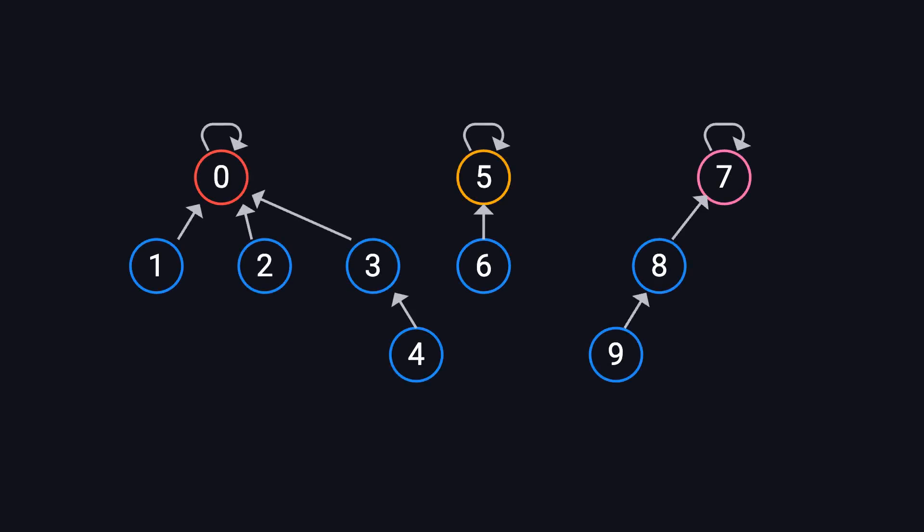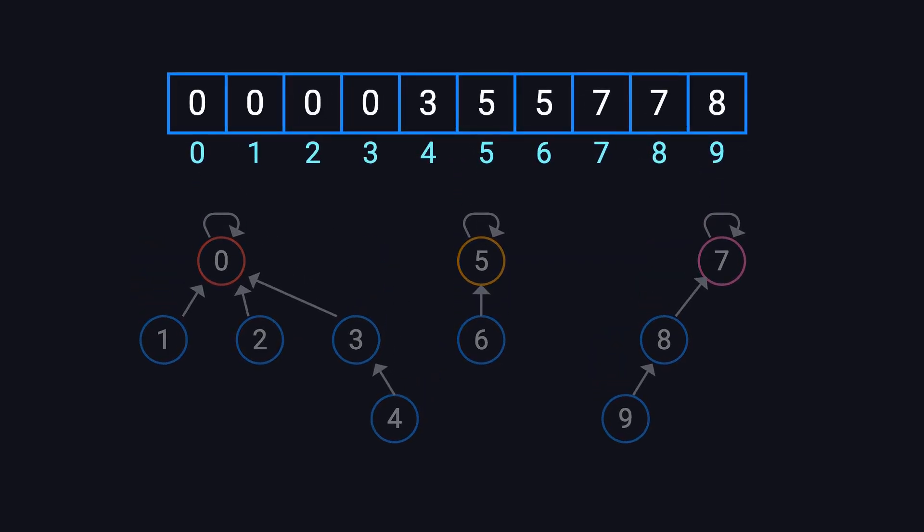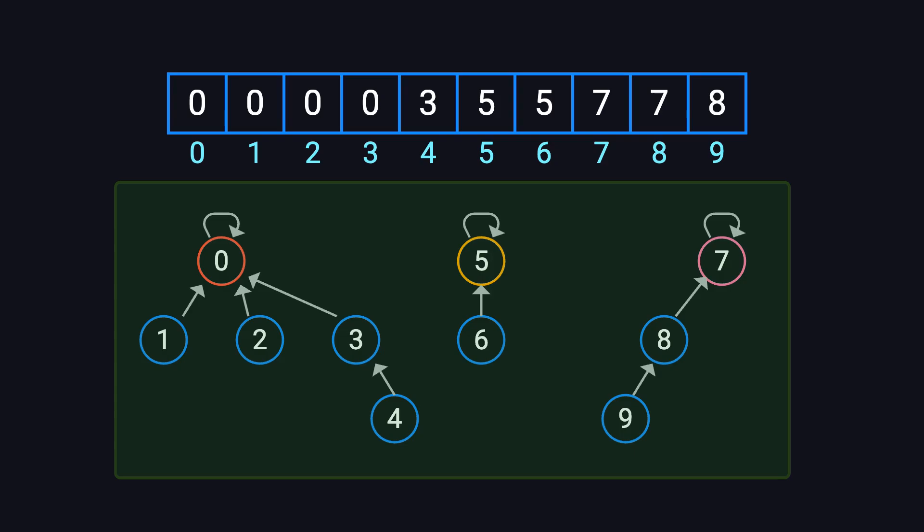While we usually imagine the Union-Find structure visually as a tree, in actual programming, it's typically implemented using an array. In this array, each index represents an element, and the value at that index represents its parent. For example, if parent[4] equals 3, it means that element 4's parent is element 3. By following parent links upward step by step, we eventually reach an element that is its own parent. This element is called the root, and it uniquely represents its group. Visually, this forms a forest where each tree is rooted at a representative element. Every node, either directly or indirectly, points to its root, which is why this structure is often referred to as a rooted tree.